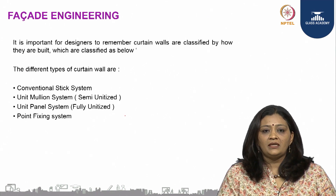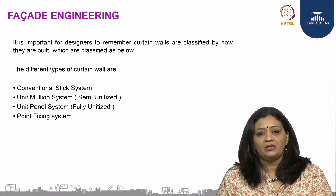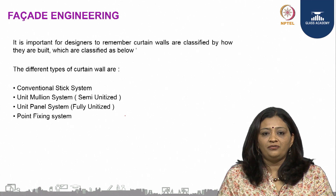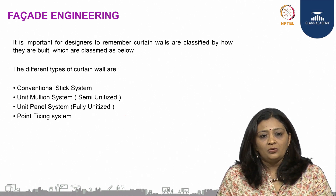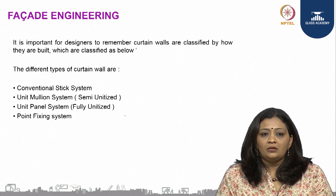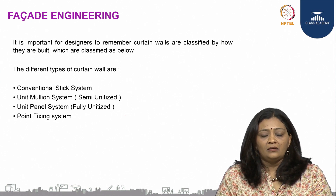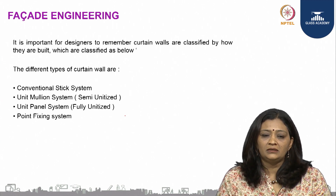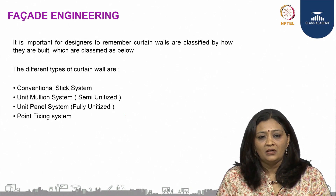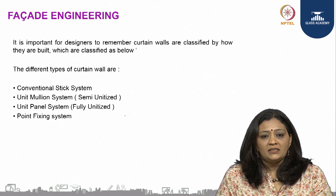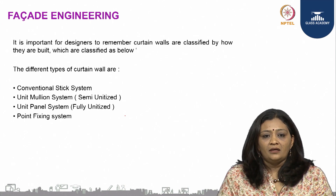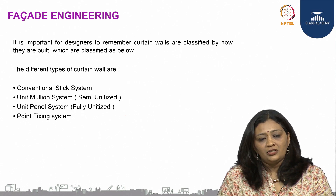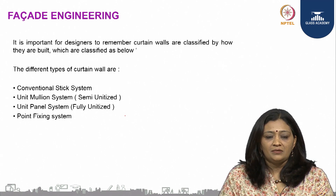It is very important for designers or persons dealing with curtain walls to know the different types of curtain walls used in the industry. The curtain wall has been classified into three main types: the conventional stick system, semi-unitized glazing, unitized glazing, and point fixed systems such as tension rod and cable systems.